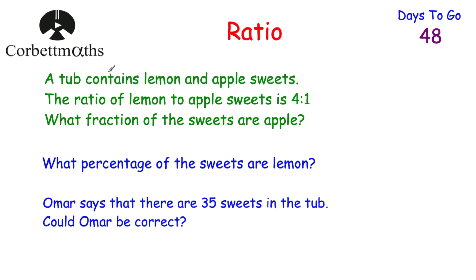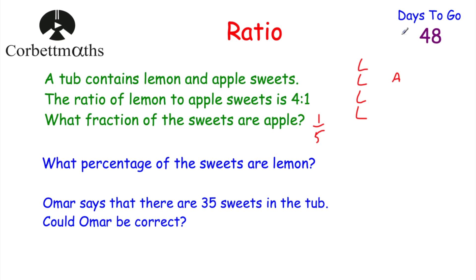Here's a similar question to try: a tub contains lemon and apple sweets in the ratio 4 to 1. What fraction of the sweets are apple? For every 4 lemon sweets there is 1 apple sweet, so altogether there are 5 sweets in one group and 1 of them is apple. The fraction of apple sweets is one fifth, and that always cancels down to one fifth regardless of the total.